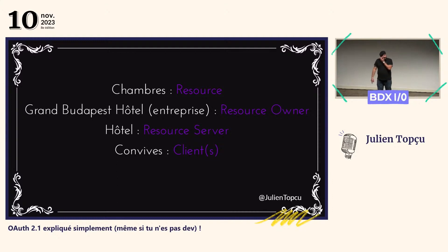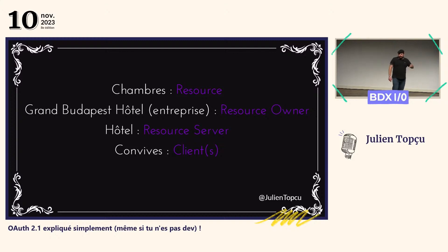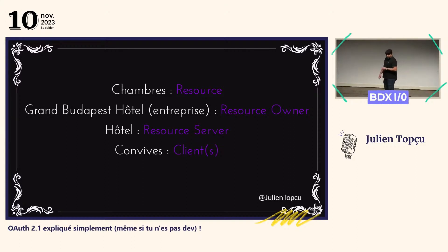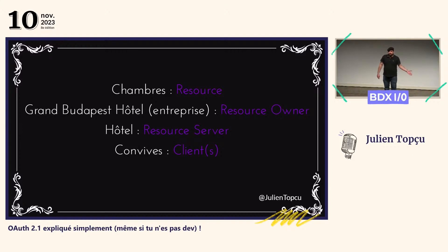Le Grand Budapest Hôtel, au sens de l'entreprise, c'est cette entreprise qui possède les chambres, donc on va appeler ça le resource owner. L'hôtel au sens du bâtiment, là où on trouve physiquement les chambres, c'est le resource server. Et les convives, ce sont les personnes qui tentent d'accéder aux chambres, donc ce sont les clients.